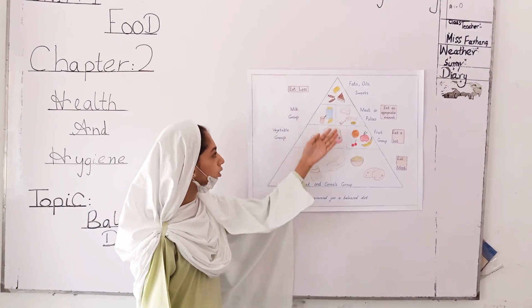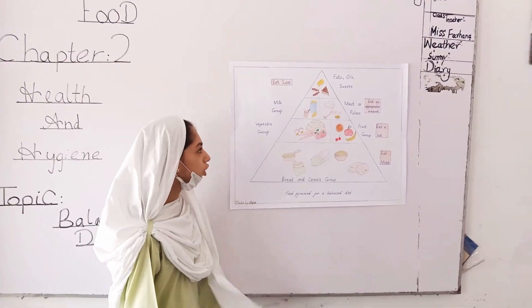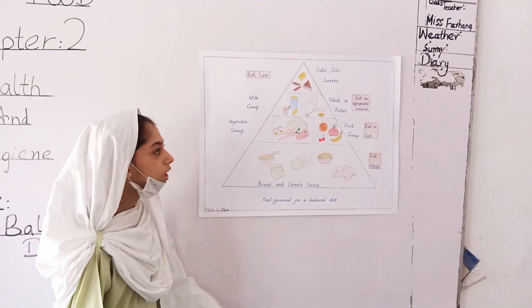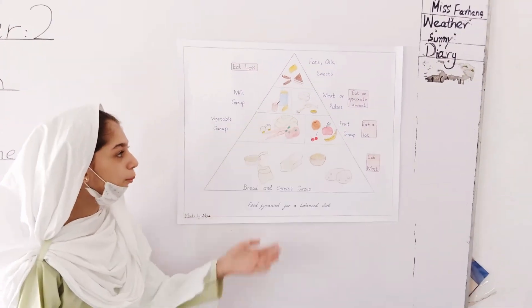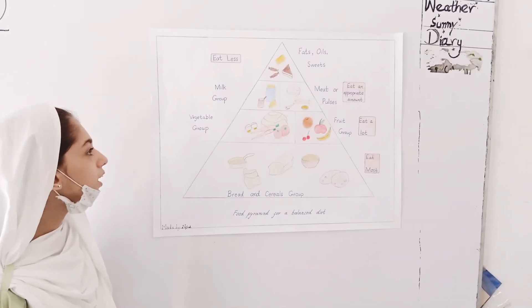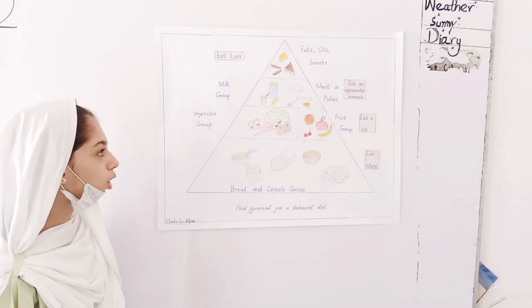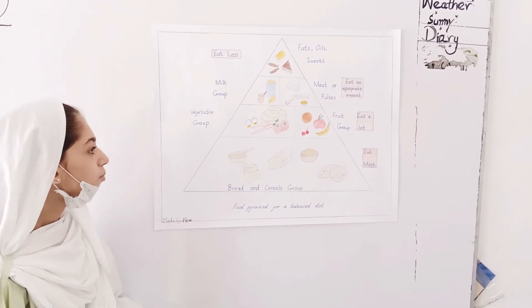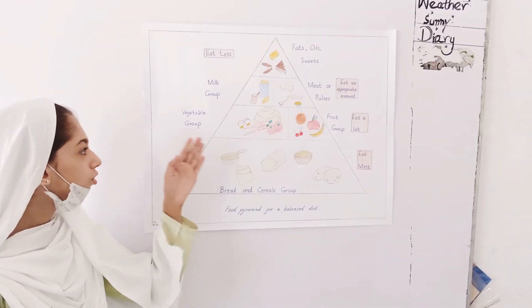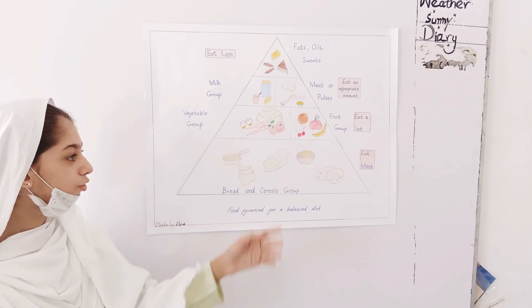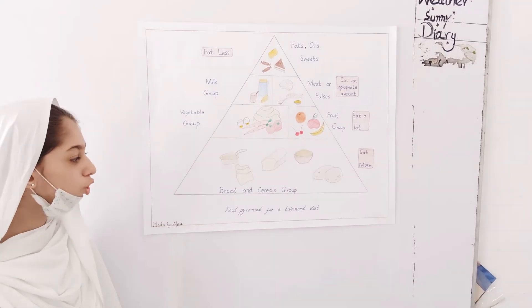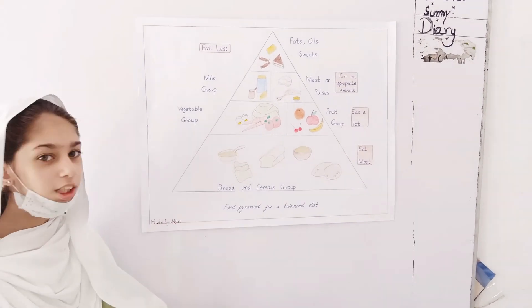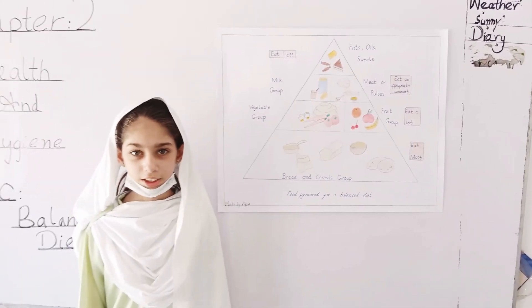Eat less fat. Oil and wheat in an appropriate amount. Milk and wheat for pulses. Eat a lot of vegetables and fruits. Eat most bread and sea vegetables. Thank you.